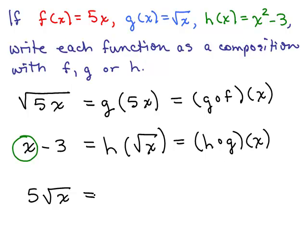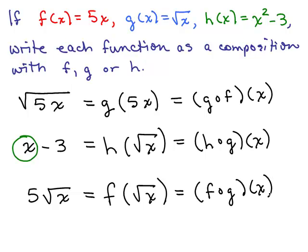Last one: 5√x. Looking at the functions, that's 5 times something — that's the f function. And it's 5 times √x. The square root of x is g(x). So this is f(g(x)). These are pretty challenging problems — I'd suggest you take them and try them again.